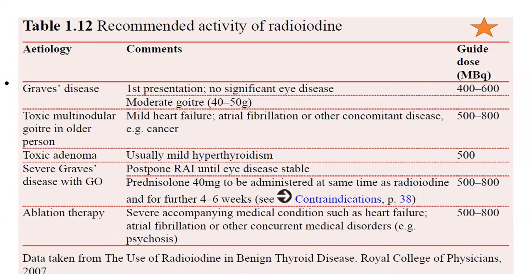The recommended radioiodine activity for different thyroid conditions: Graves' disease first presentation with no significant eye disease and moderate goiter — 400 to 600 MBq. Toxic multinodular goiter in an older person — 500 to 800 MBq. Toxic adenoma — usually 500 MBq. Severe Graves' disease with Graves' ophthalmopathy — ideally postpone radioiodine until eye disease is stable; if required, administer prednisolone 40 mg at the same time and for four weeks after, using a dose of 500 to 800 MBq. Severe accompanying medical conditions such as heart failure or atrial fibrillation — 500 to 800 MBq. Several questions have been asked from this chart in previous exams.